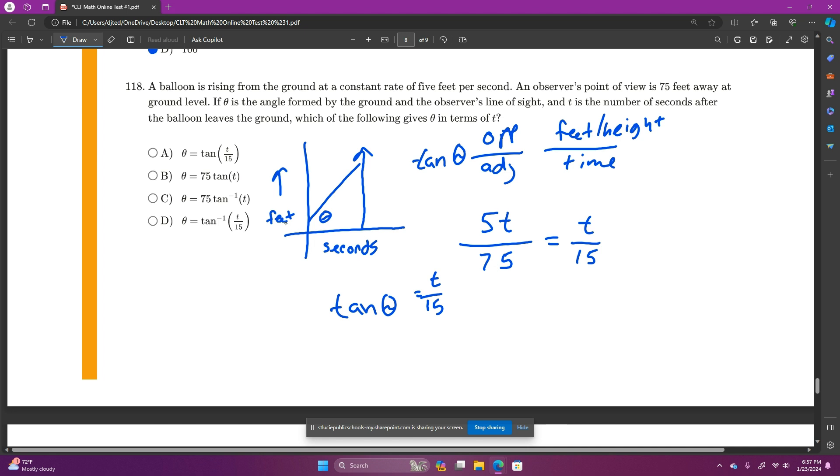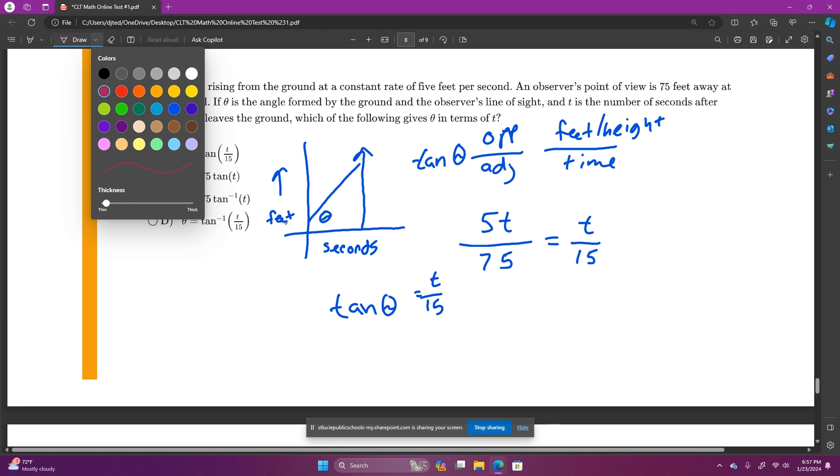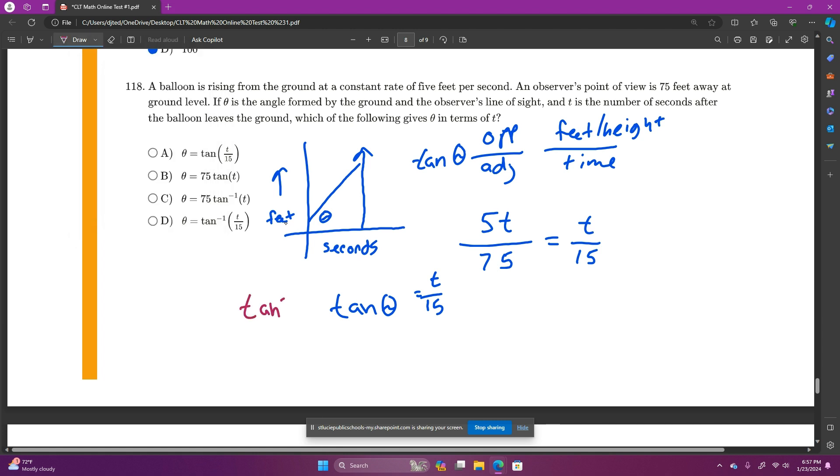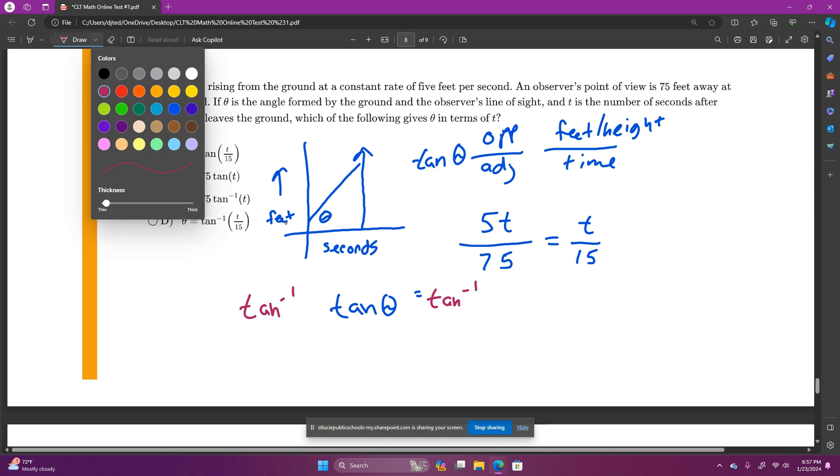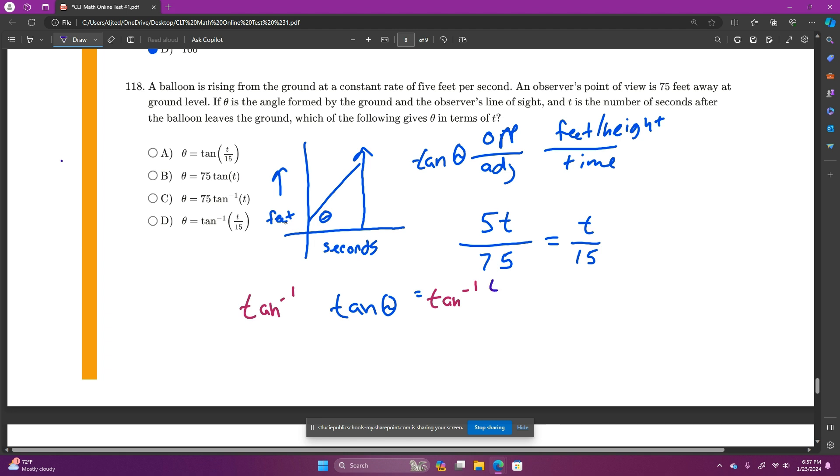So to cancel out our tangent, we're going to take tangent to the negative 1 of both sides. So let's put that in. Tangent negative 1 of this, and then you have to do that on the other side as well. Tangent negative 1 of t over 15. And the tangent negative 1 and tangent gets our theta by itself. So theta equals tangent negative 1 of t over 15. So that's answer choice D.